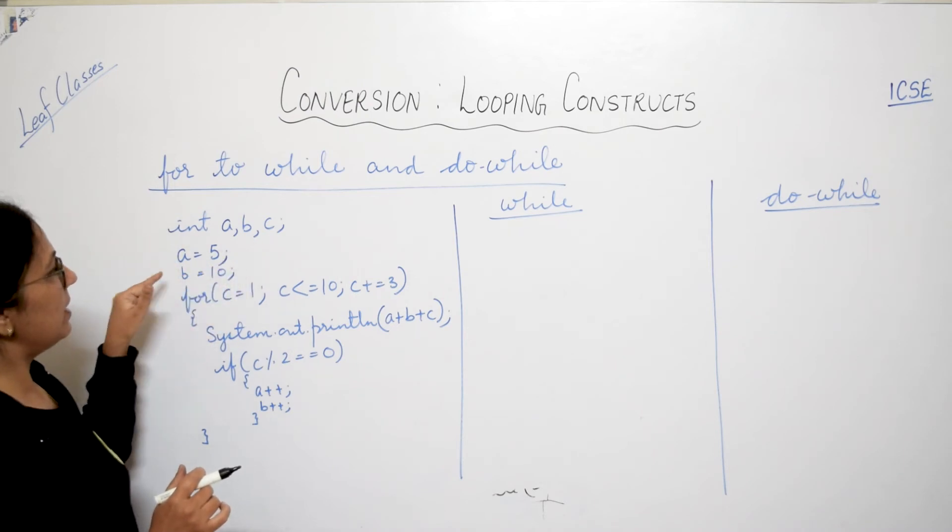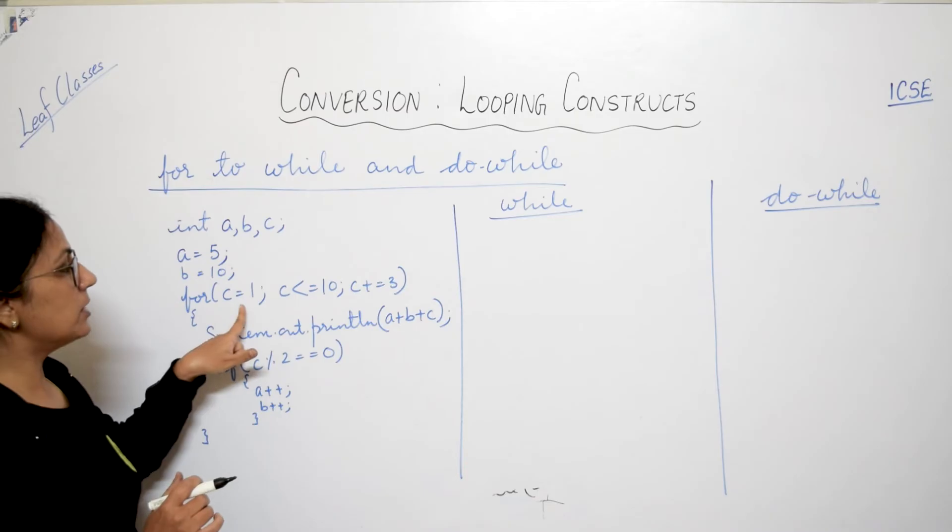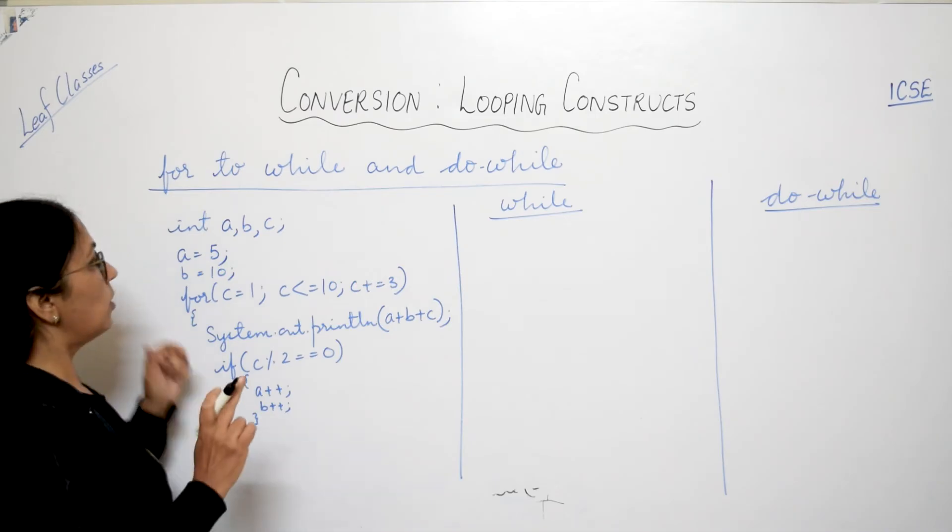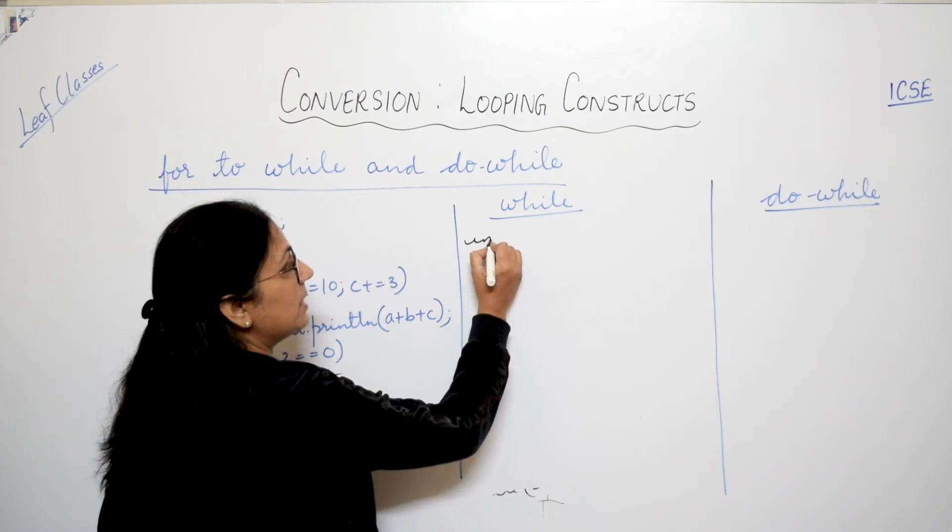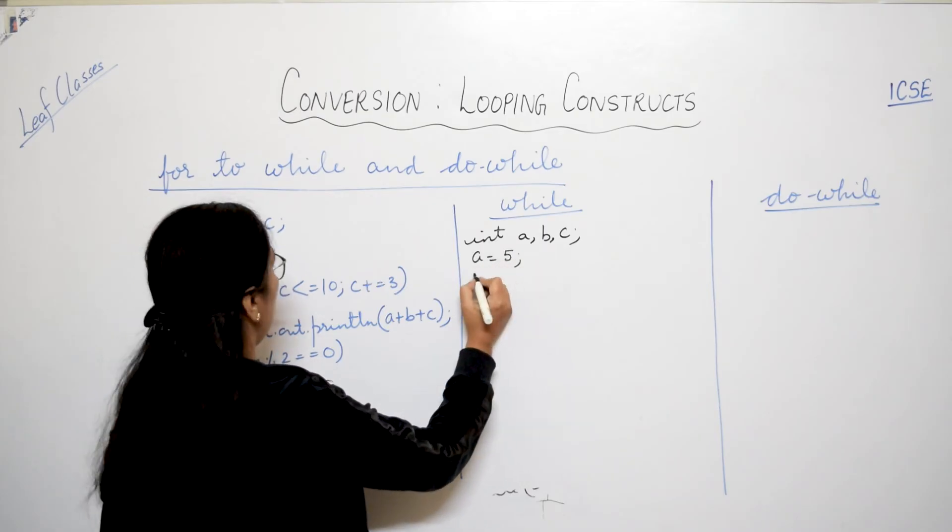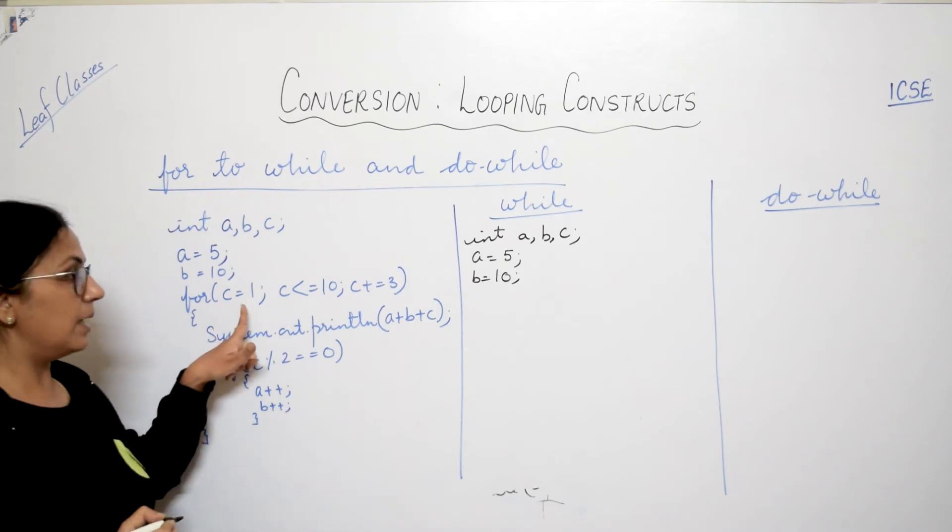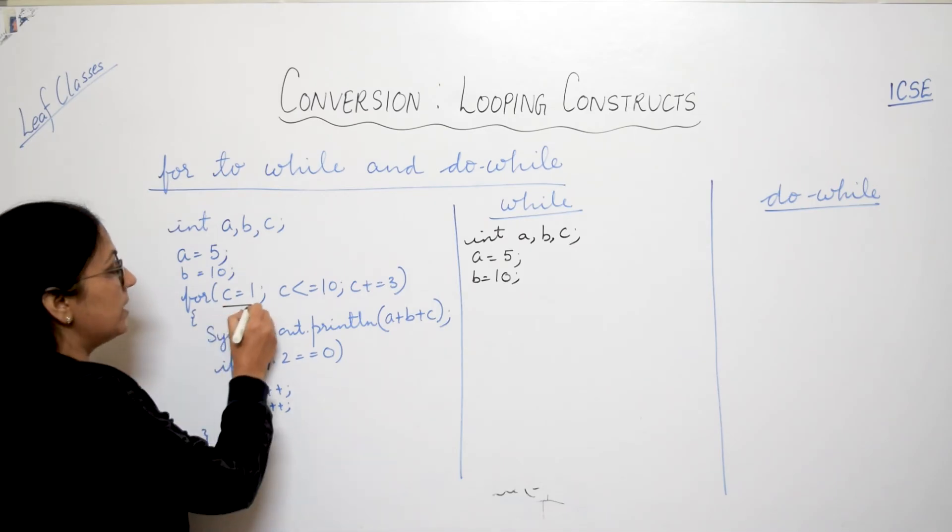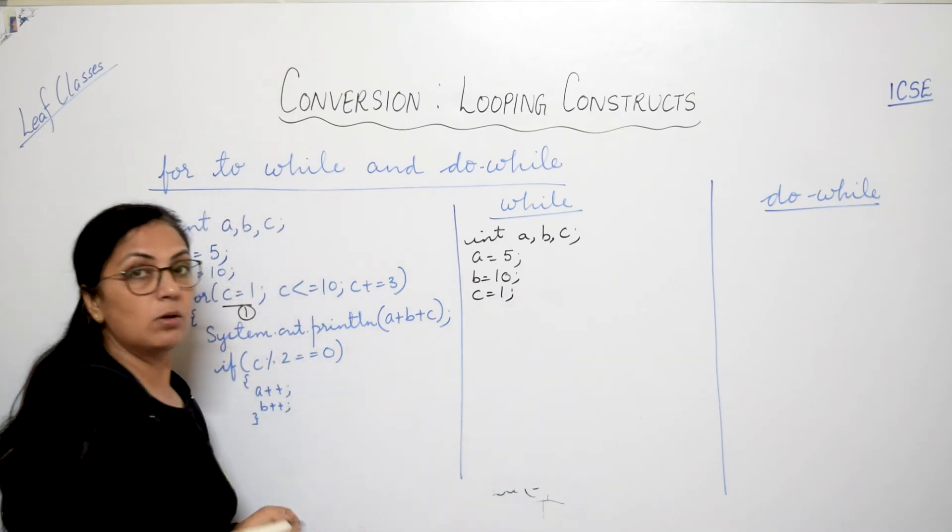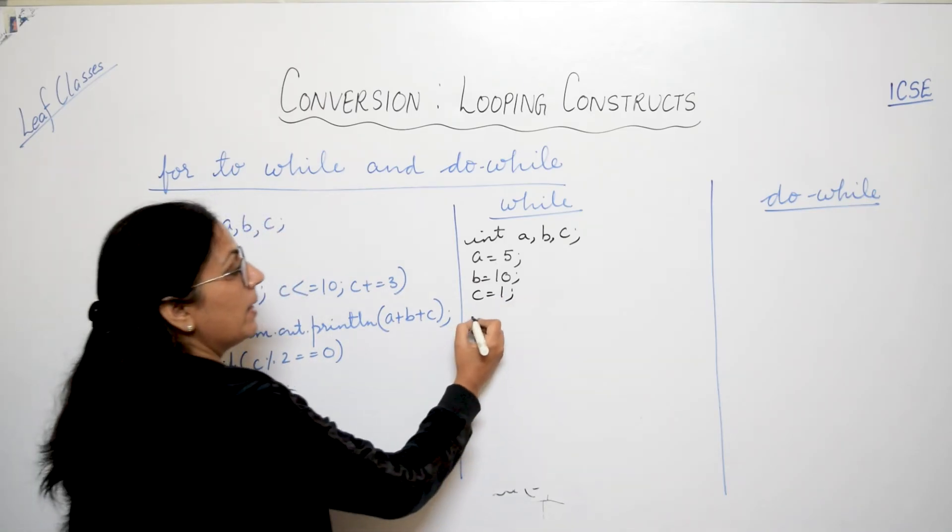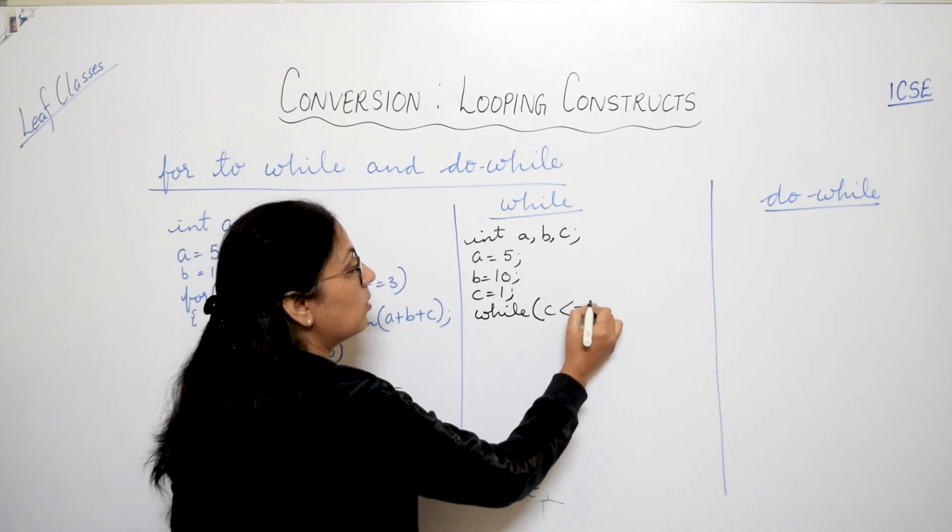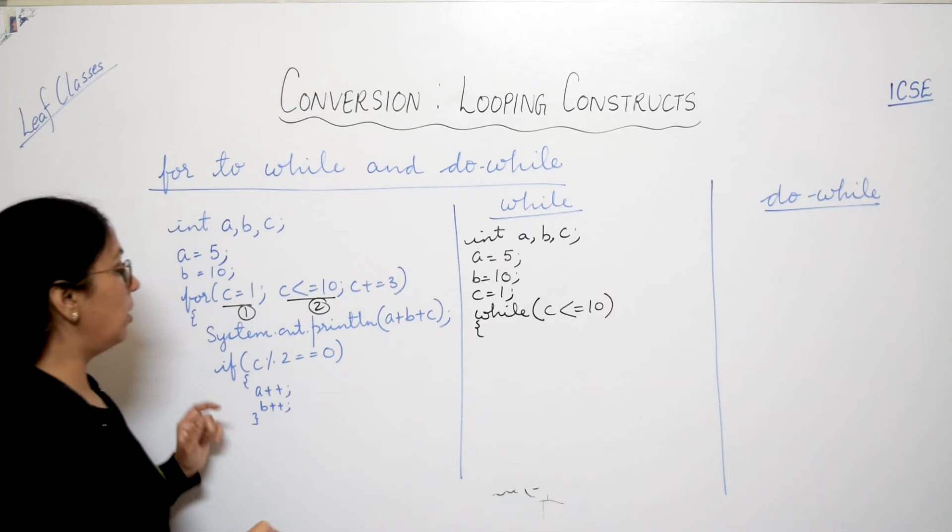Now here if you see int a, b, c, a equals to 5, b equals to 10, and here for c equals to 1, c less than equals to 10. So in this for loop c is the control variable. Alright. So what else is given here you will write exactly same: int a comma b comma c, a equals to 5, b equals to 10, and here c equals to 1. What I told you this is number 1. So this has to be given before the loop. So here you will be writing c equals to 1. C equals to 1 kaha denge? While it is shiru honne se pehle. Aur while ke saath hum kya denge? Condition denge. Condition kya hai? This is number 2. So condition will be c less than equals to 10. And then you start the body of the loop.